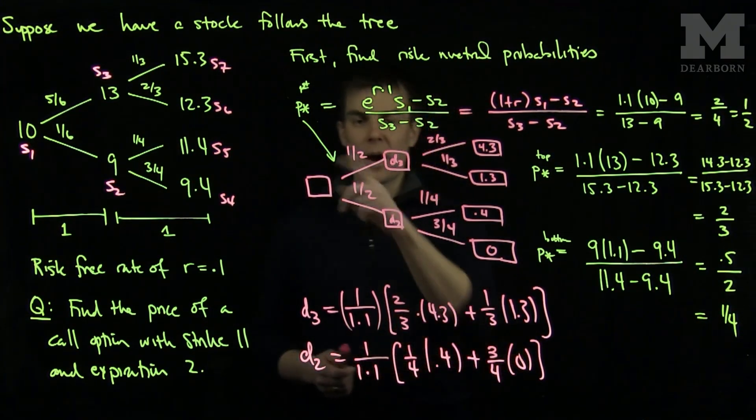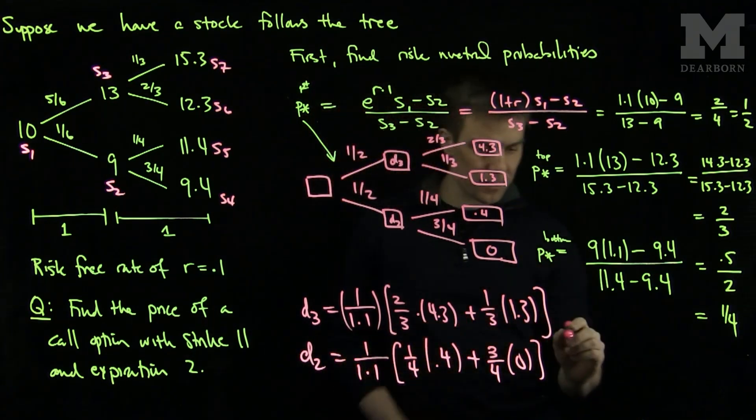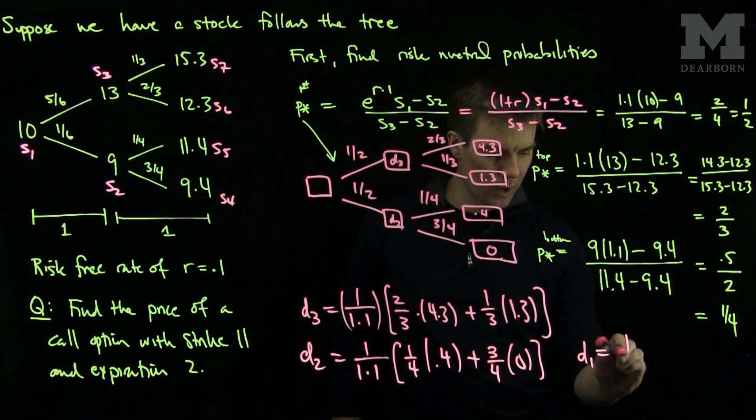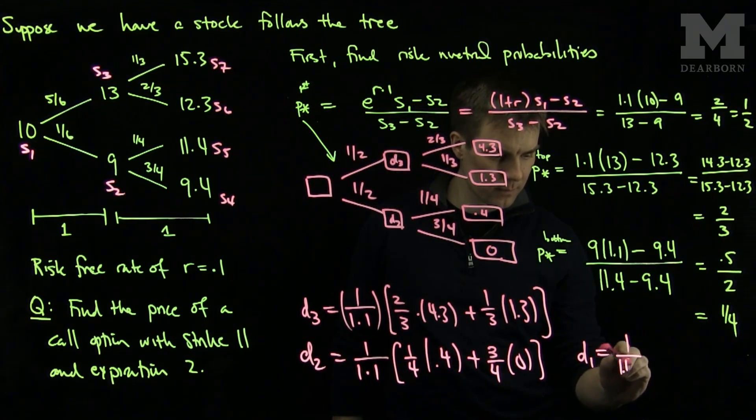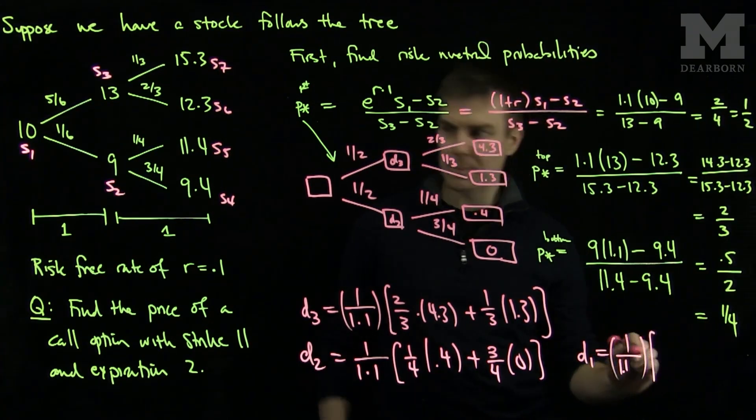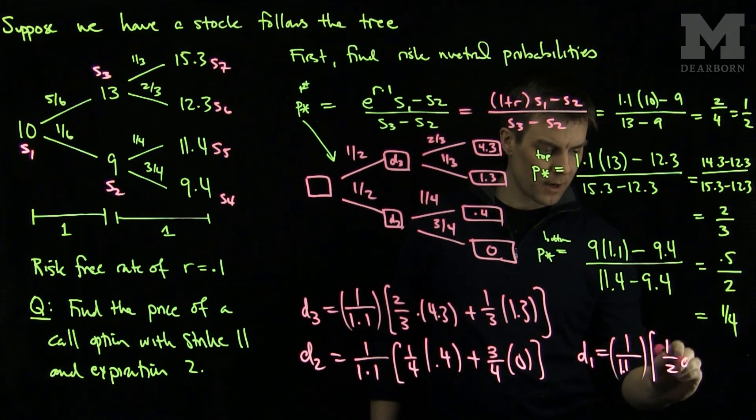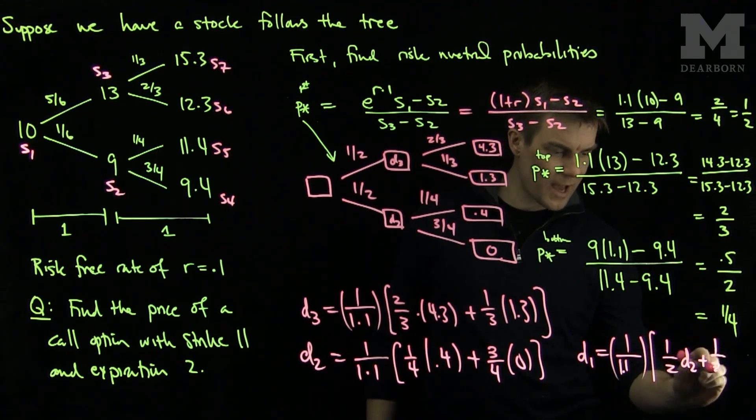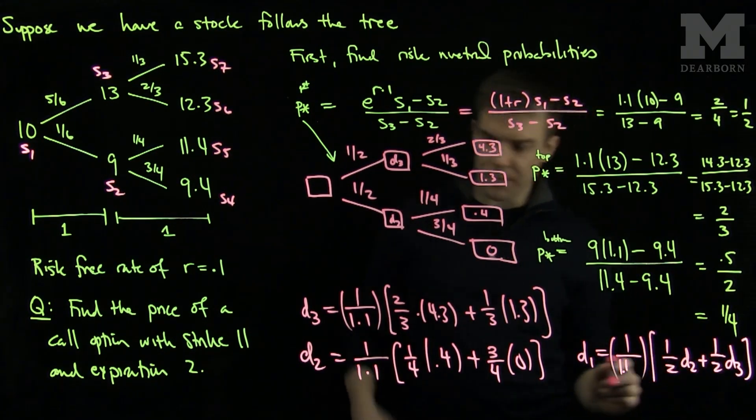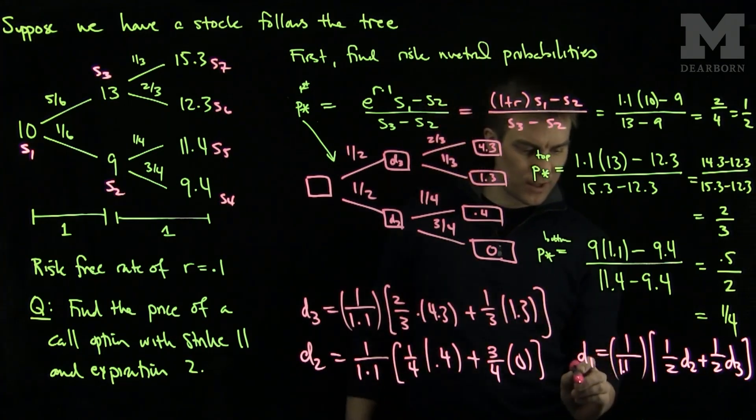Now that I know d3 and d2, I can discount one more time to find d1. So d1 will be 1 over 1.1 times the expected value of d3 and d2. So it will be 1 half of d2 plus 1 half of d3. I will fill in the values d2 to d3 to this formula. And this will give me the value of the call option at time 1.